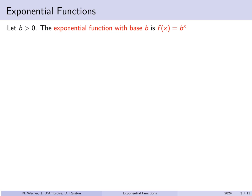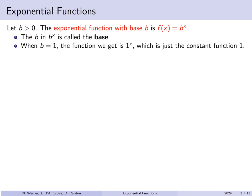Suppose b is a positive number. The exponential function with base b is f of x equals b to the x. It is important that b not be 0 and not be negative, so b must be a positive number. The number b is called the base of the function. Now b equals 1 is a particularly uninteresting choice of base — you would get 1 to the x, but 1 raised to any power is just 1, so f of x is simply the constant function 1.